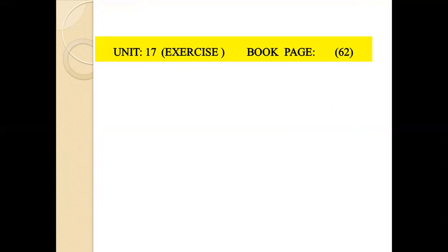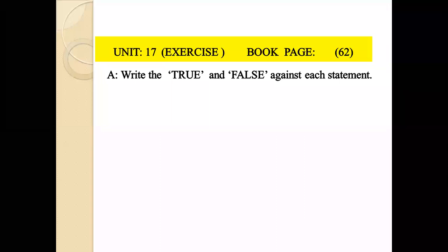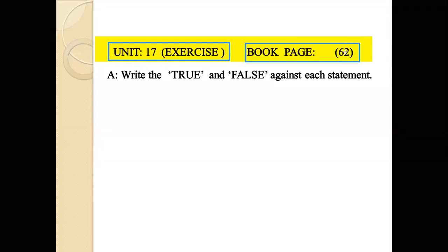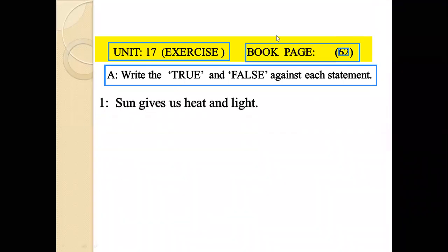In this exercise, we are going to clarify the right and wrong statements. Unit number 17, exercise, book page number 68. Write true or false against each statement. Number 1: Sun gives us heat and light.